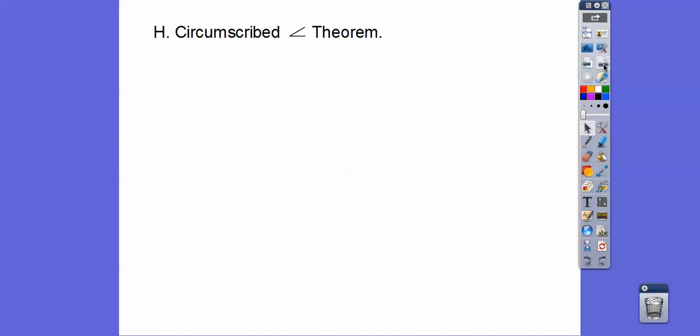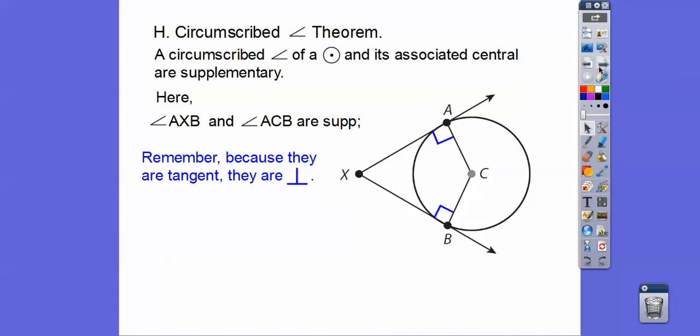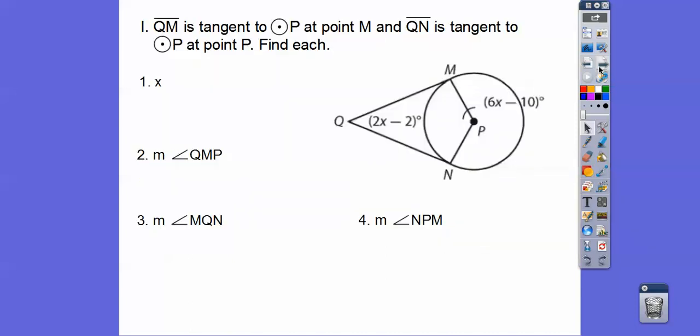And so what happens with circumscribed angles is it's supplementary with the associated central angle. So this angle and this angle are supplementary. So we can say angle X right here. And we can probably say angle C. So angle X and angle C are supplementary, which means 180. Now remember, since they're tangent, we know that those are right angles. They're perpendicular up there. So those are also supplementary.